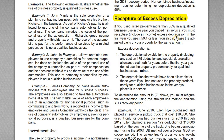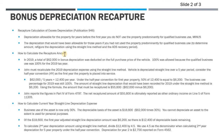Excess depreciation is the depreciation taken for the year you first placed the property in service minus the depreciation that would have been allowed under the straight-line method. To determine that amount, you must refigure the depreciation using the straight-line method and the ADS recovery period — five years for listed property. In 2019, the total $62,000 in bonus depreciation was deducted on the full purchase price because qualified business use was 100%.